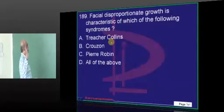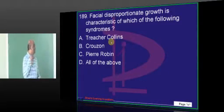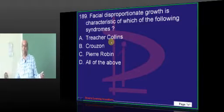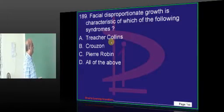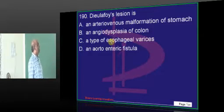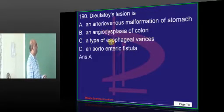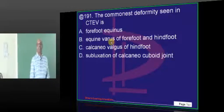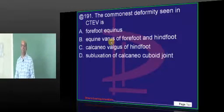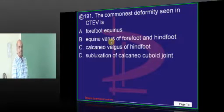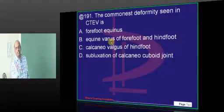Last 10 questions. Disproportionate facial growth, Geneva Convention of APPG - all of the above. Then diphthalloid lesion, AV malformation in the stomach. Commonest deformity - equinovarus. I just need to check this.